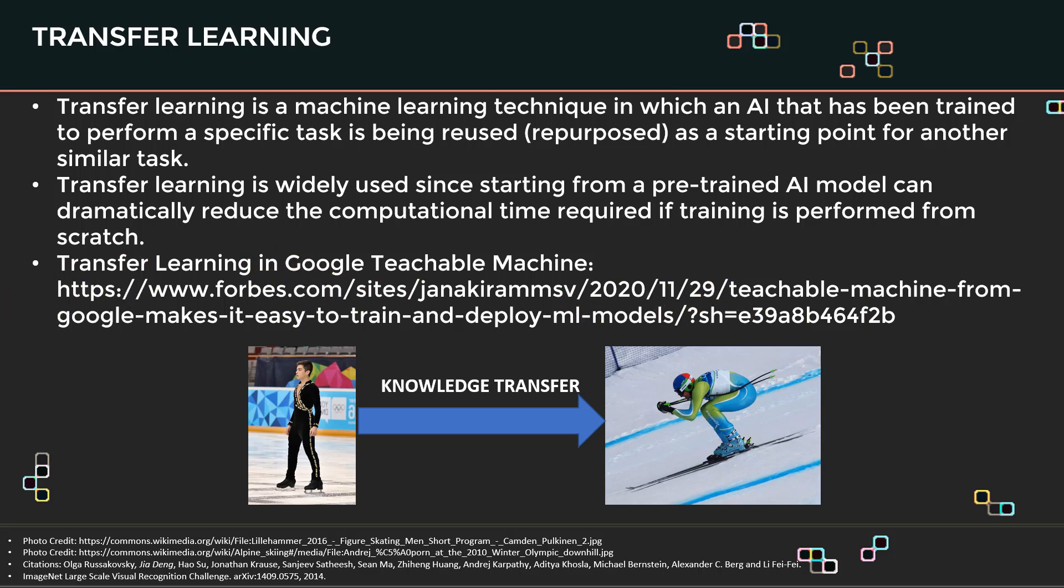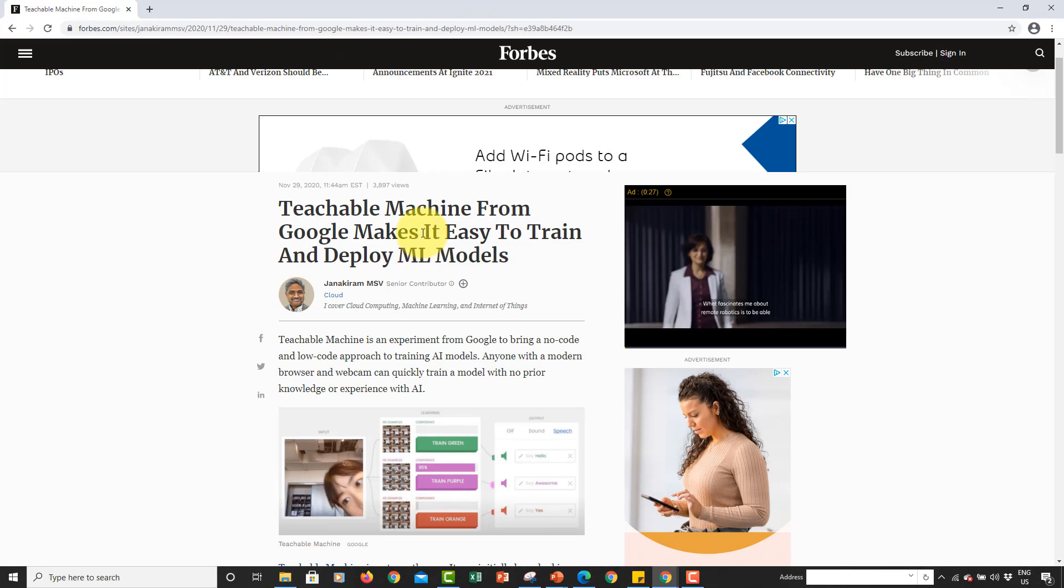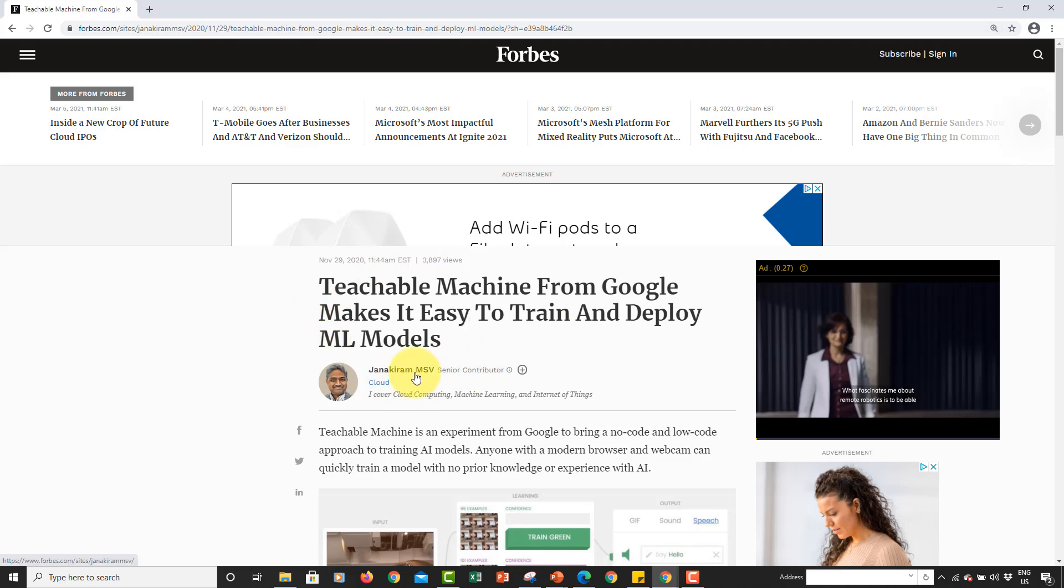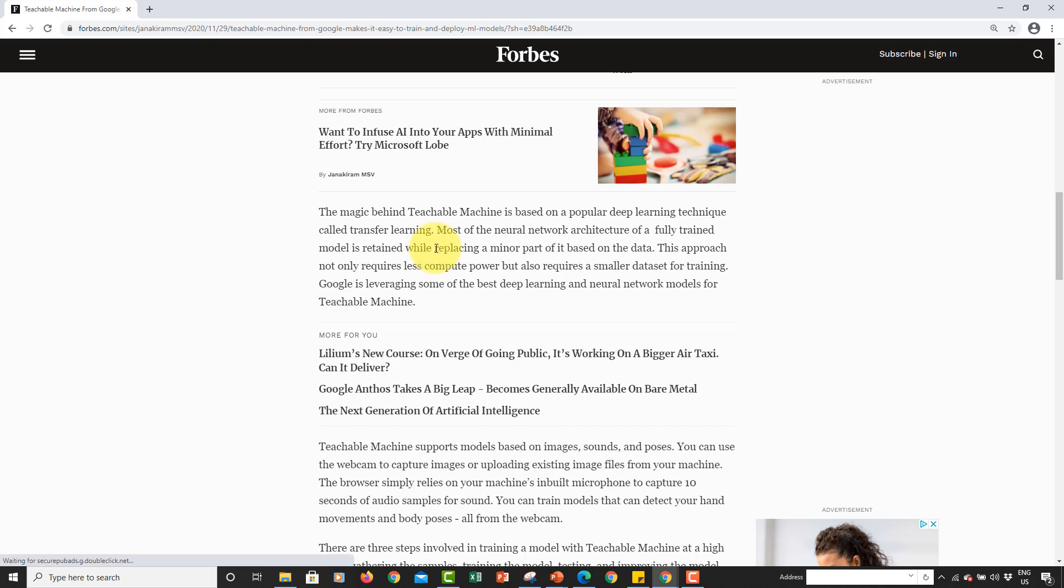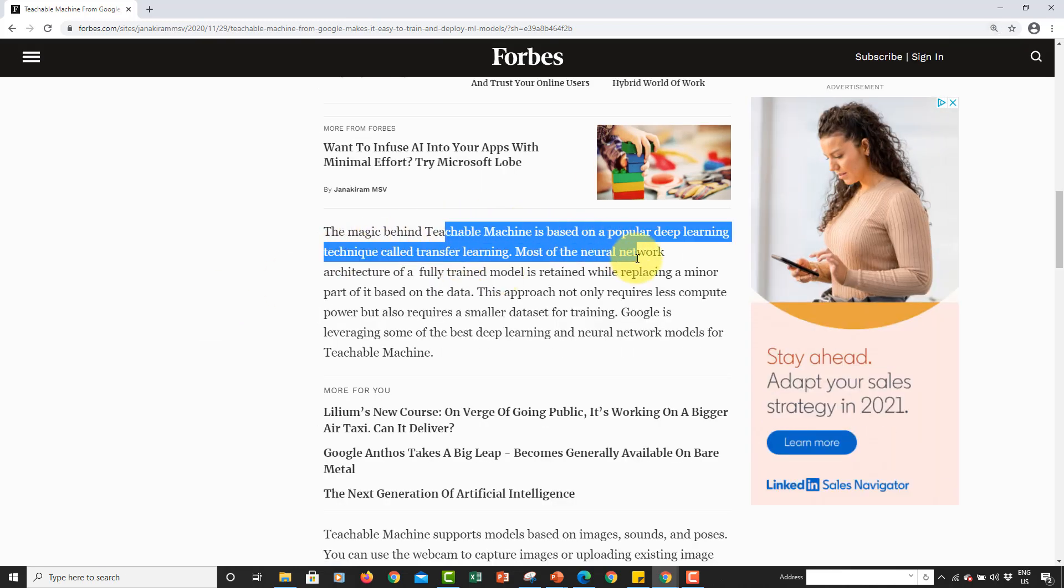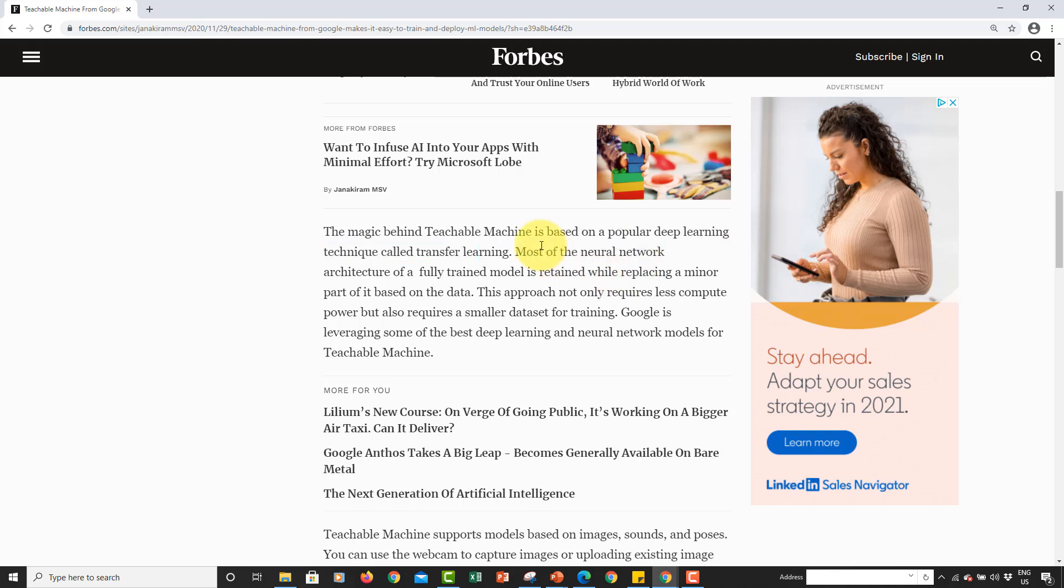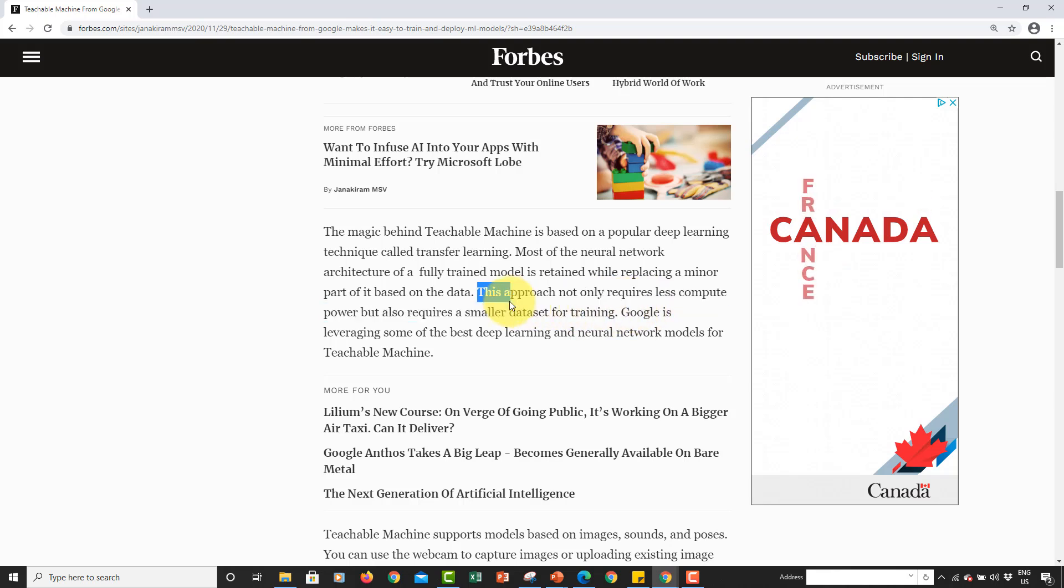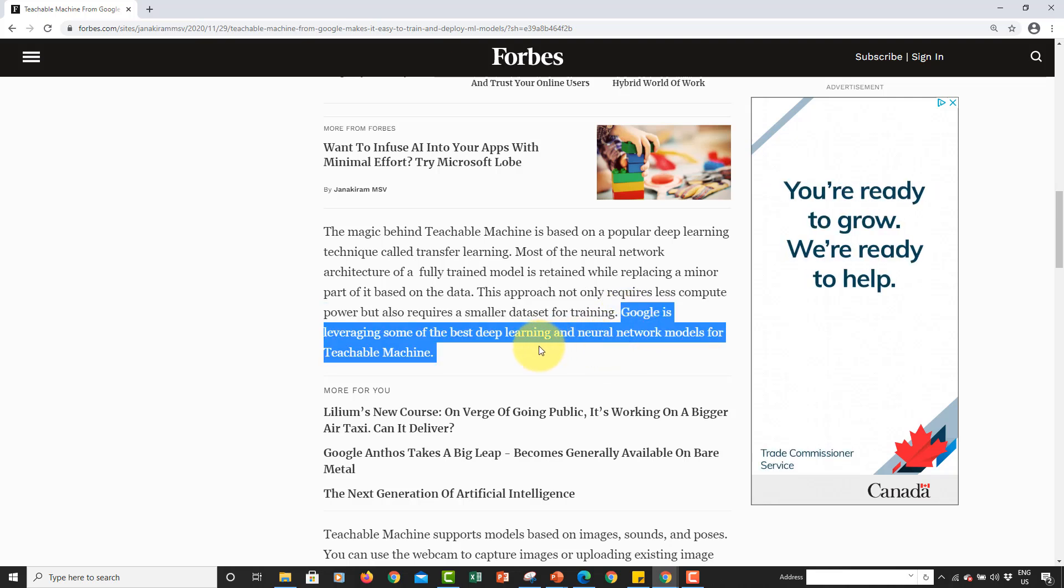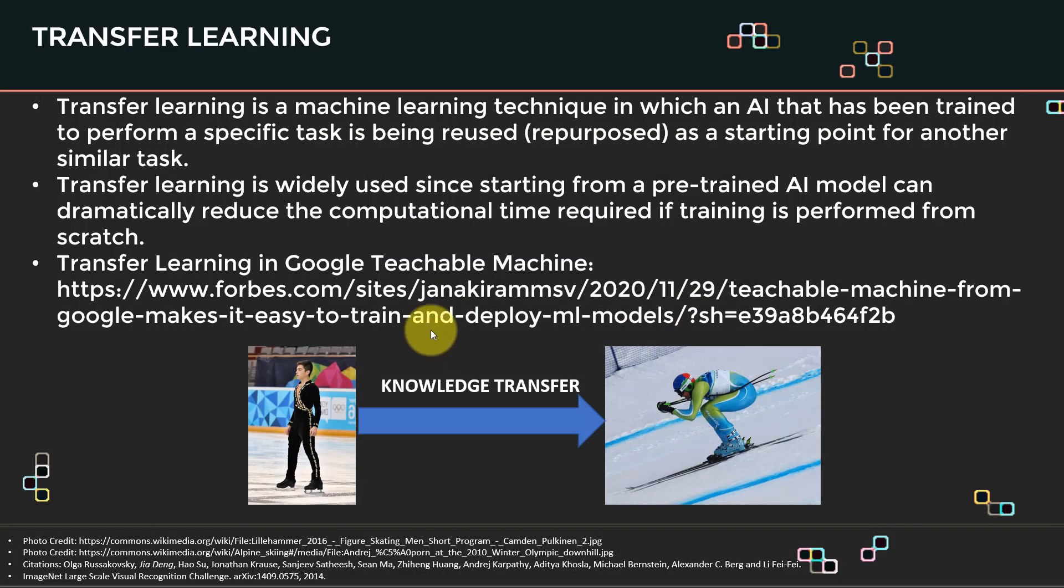So let's actually go ahead to this link. It's actually very important. So if you guys see here, this is a really nice article by Janik Karam. He talks about Google Teachable Machine. And if you scroll down, you should be able to see the magic behind Teachable Machine is based on a popular deep learning technique known as transfer learning. So most of the neural network architecture of a fully trained model is retained while replacing a minor part of it based on the data. And this approach not only requires less compute power, but also requires a small data set for training. And Google is leveraging some of the best deep learning and neural network models for teachable machines. So basically, we use transfer learning behind the scenes when we used Google Teachable Machines.